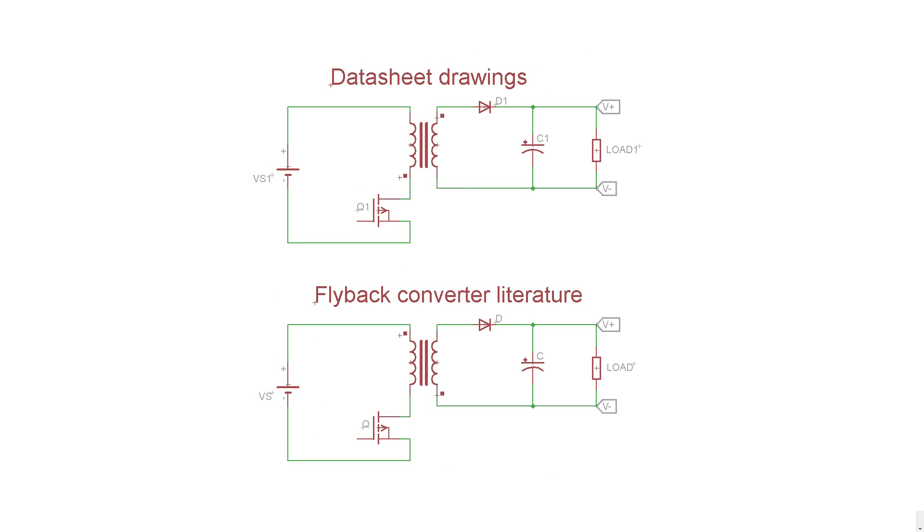However, I started reading about flyback converters, and it turns out the literature on the subject always presents the drawings the other way around. The start of the primary goes to the positive rail, and the start of the secondary goes to the negative rail.